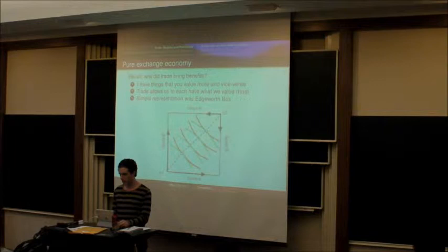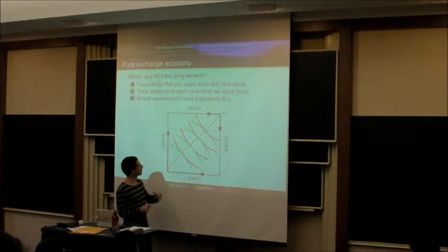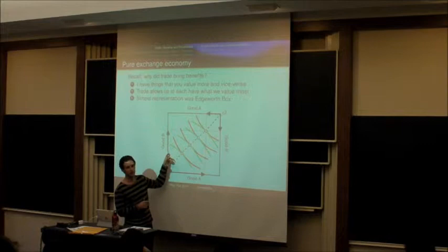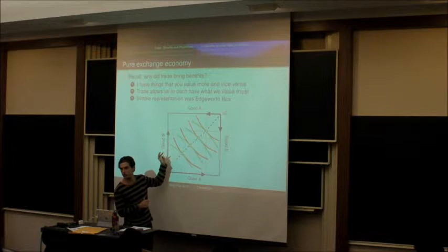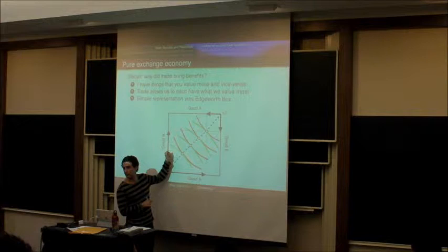That's exactly what trade allows and a simple way to represent this was the Edgeworth box. If I want one thing and you want another but we start out with the opposite things, then I can get onto a higher indifference curve and you can get into a higher indifference curve. But at the point where our two indifference curves are tangent to one another, no one can be better off as a result of trade.